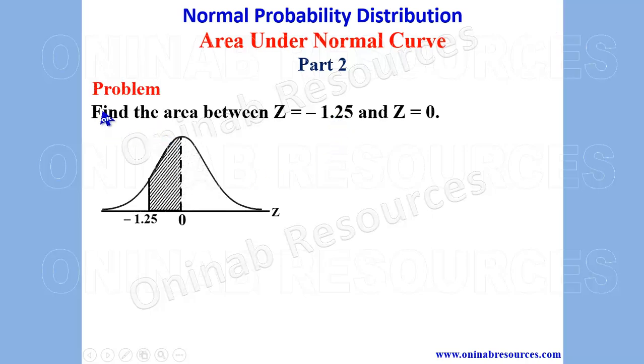We have our problem here. Find the area between z equal to negative 1.25 and z equal to 0. And this is represented in the diagram here.